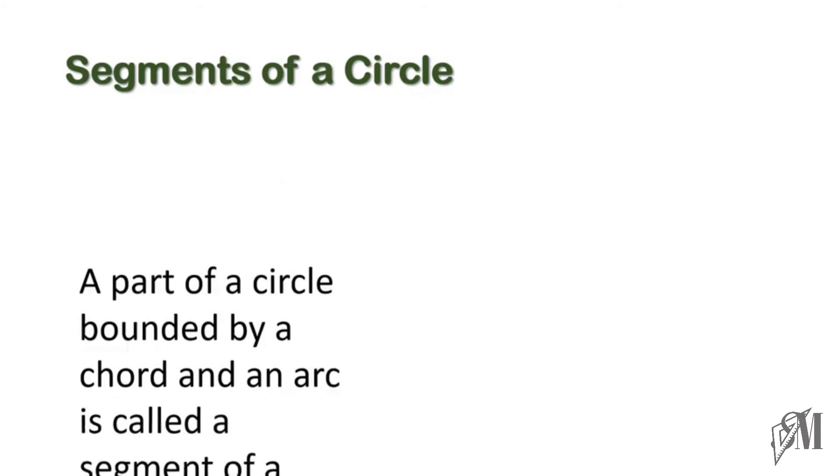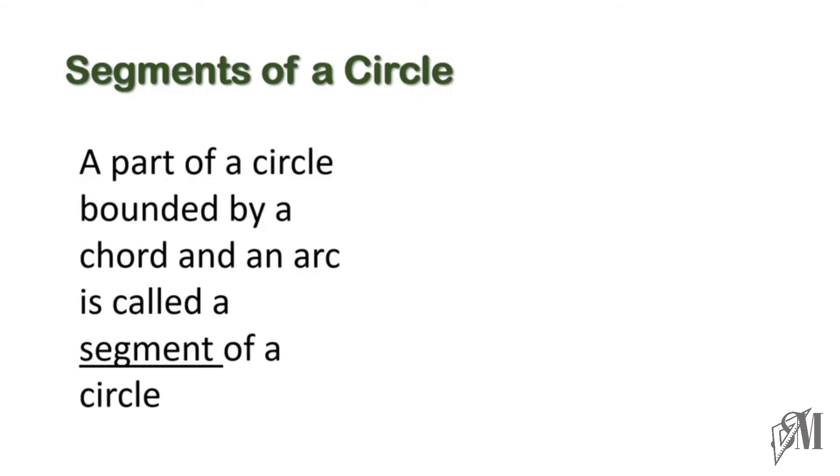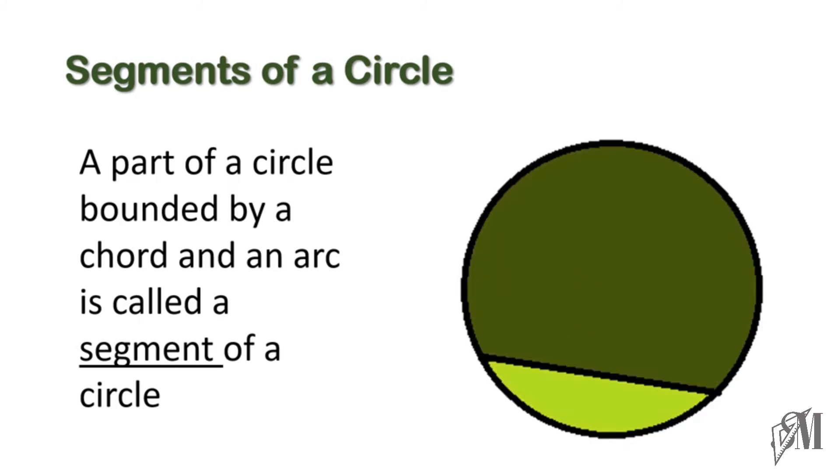A part of a circle bounded by a chord and an arc is called a segment of a circle. Even segments can be divided into two types. Now here you see there is a chord dividing the circle into two segments. The darker segment is large and it is bounded by the chord and the major arc, so it is called the major segment, whereas the smaller part is called the minor segment.